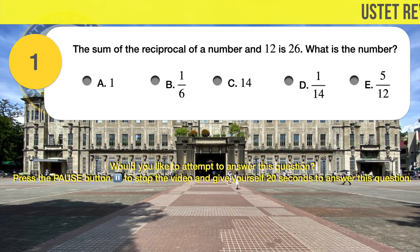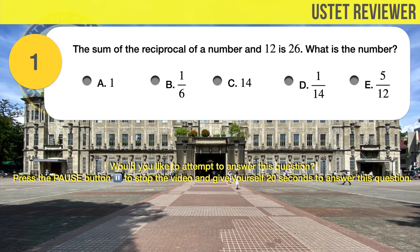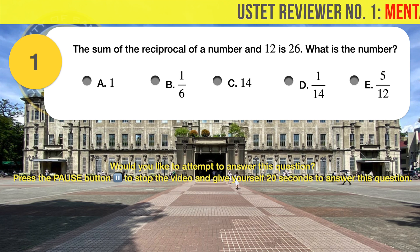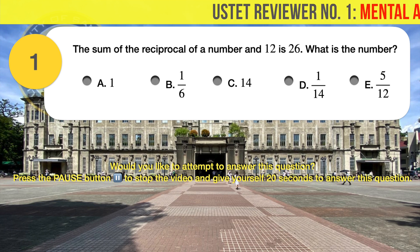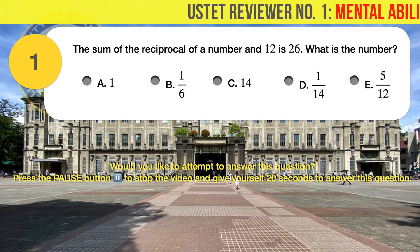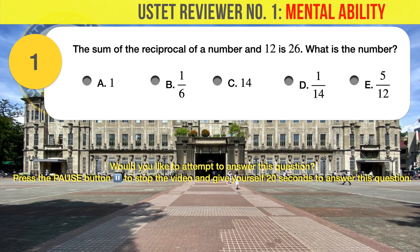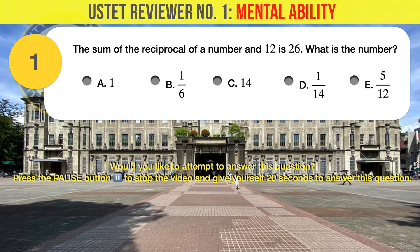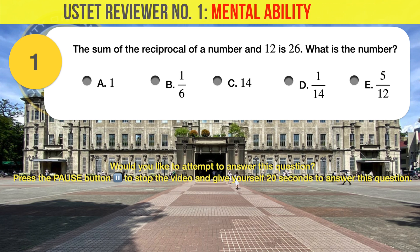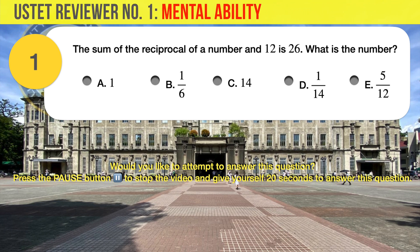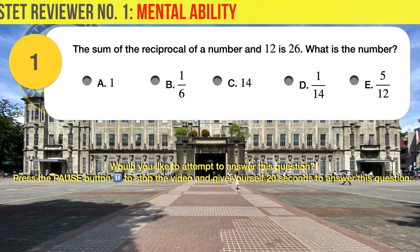Question number 1. The sum of the reciprocal of a number and 12 is 26. What is the number? A. 1, B. 1 over 6, C. 14, D. 1 over 14, E. 5 over 12.